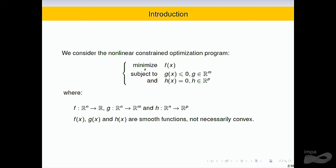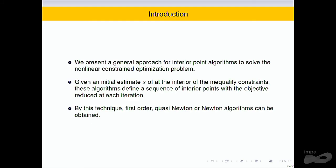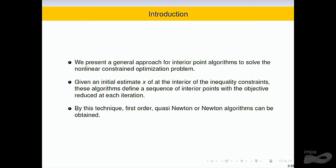In this case, the function and all the constraints are smooth functions, not necessarily convex. I present a general approach for an interior point algorithm — interior and feasible points — to solve the non-linear constrained optimization problem. Given an initial estimate of X in the interior of the inequality constraints, this algorithm defines a sequence of interior points with the objective reduced at each iteration. By these techniques, we can obtain first-order, quasi-Newton, or Newton algorithms.